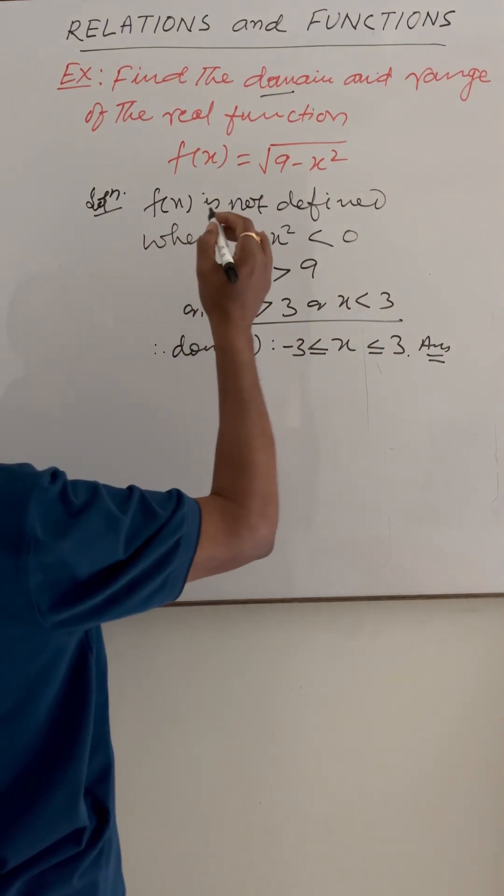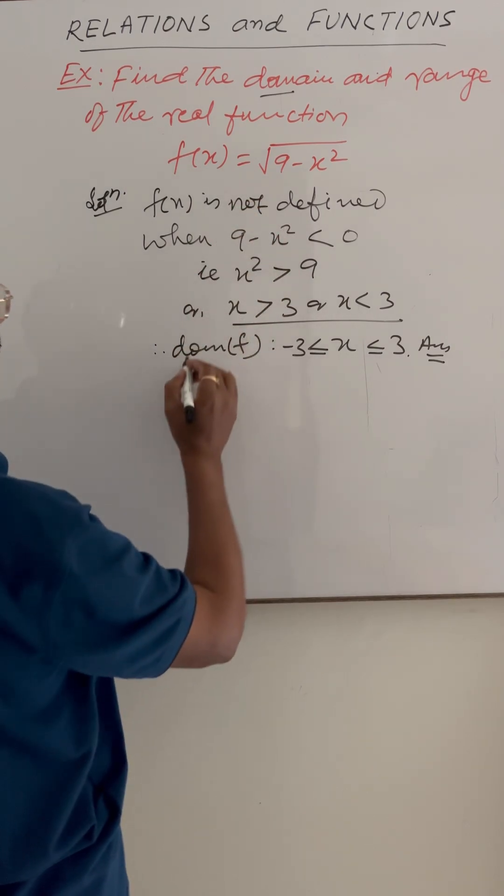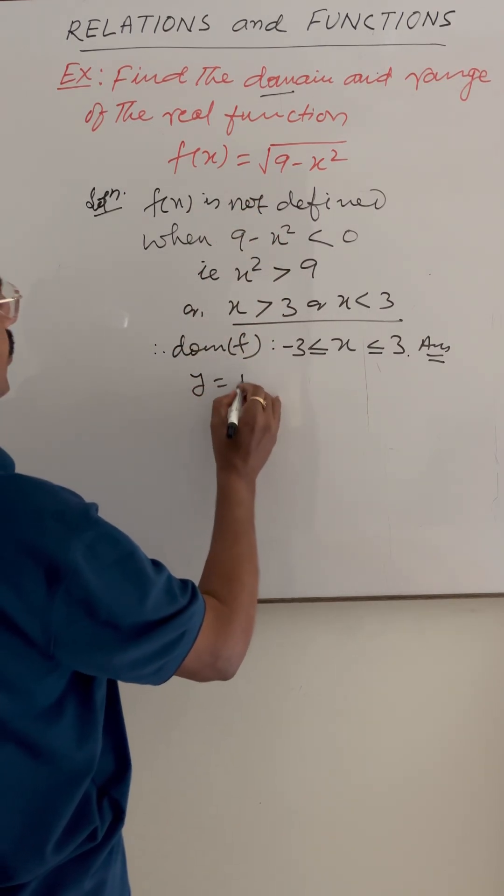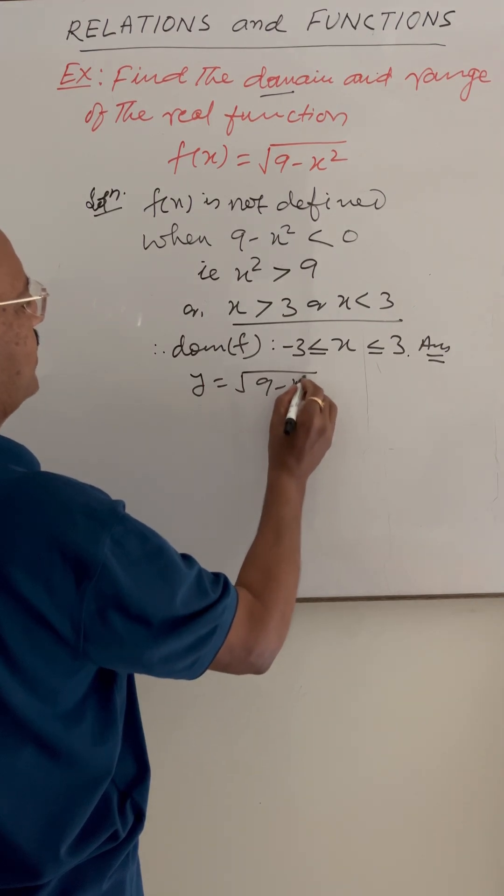And now we have to find the range. Here y is equal to the square root of 9 minus x².